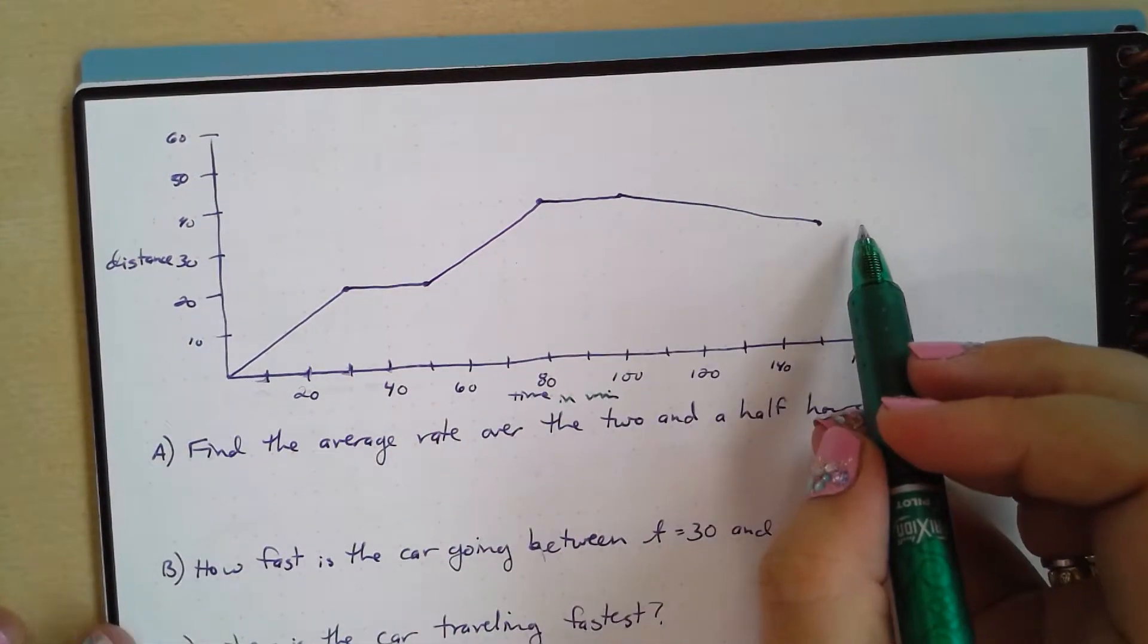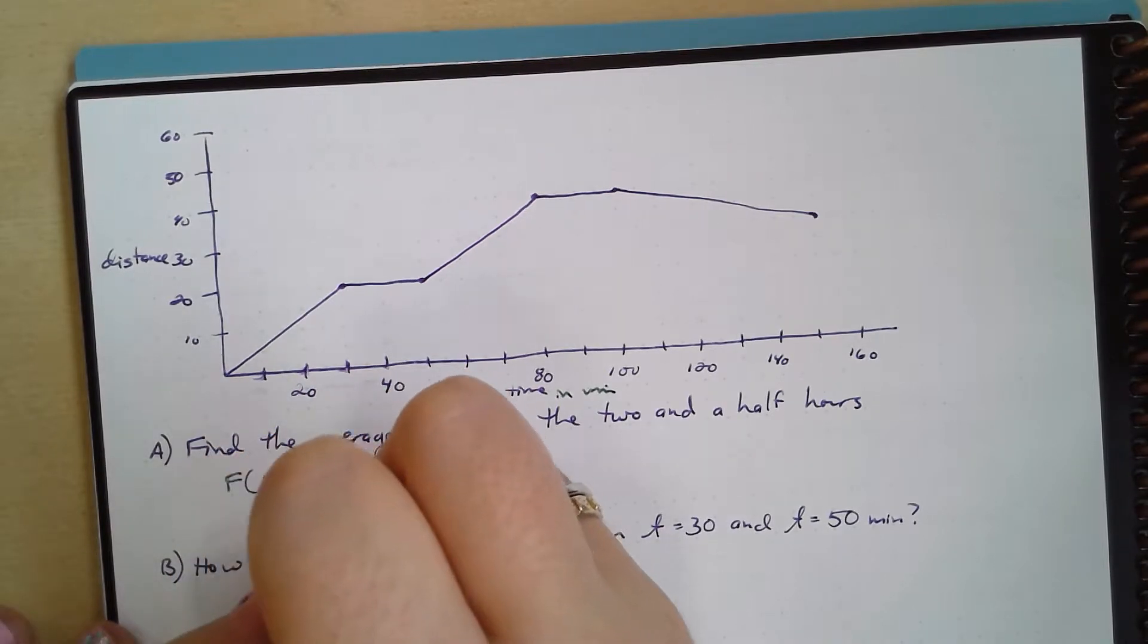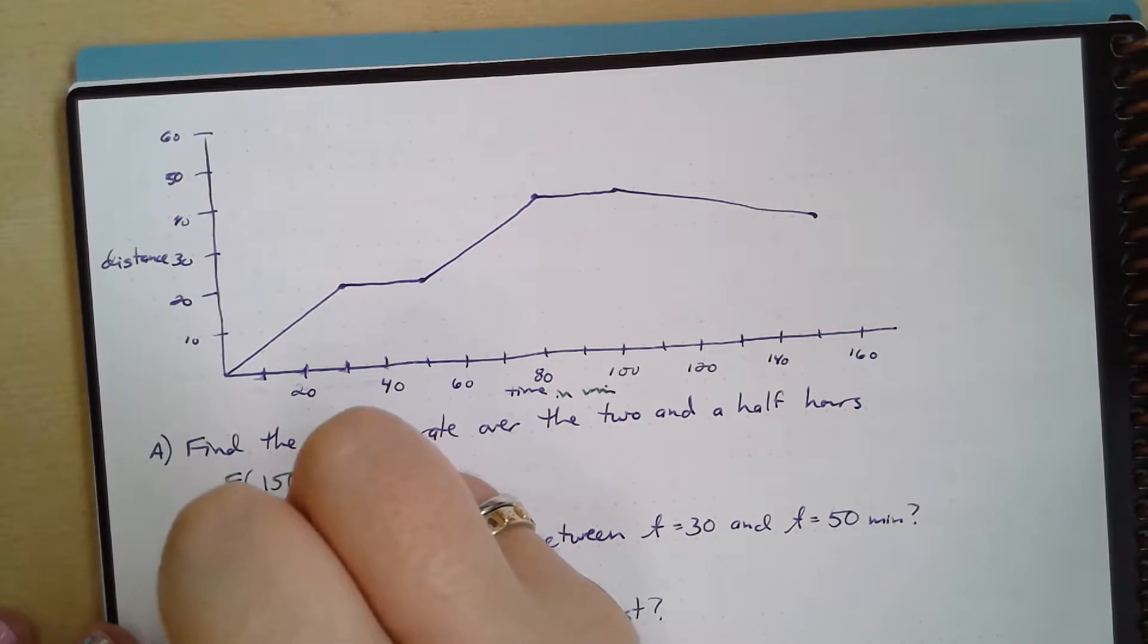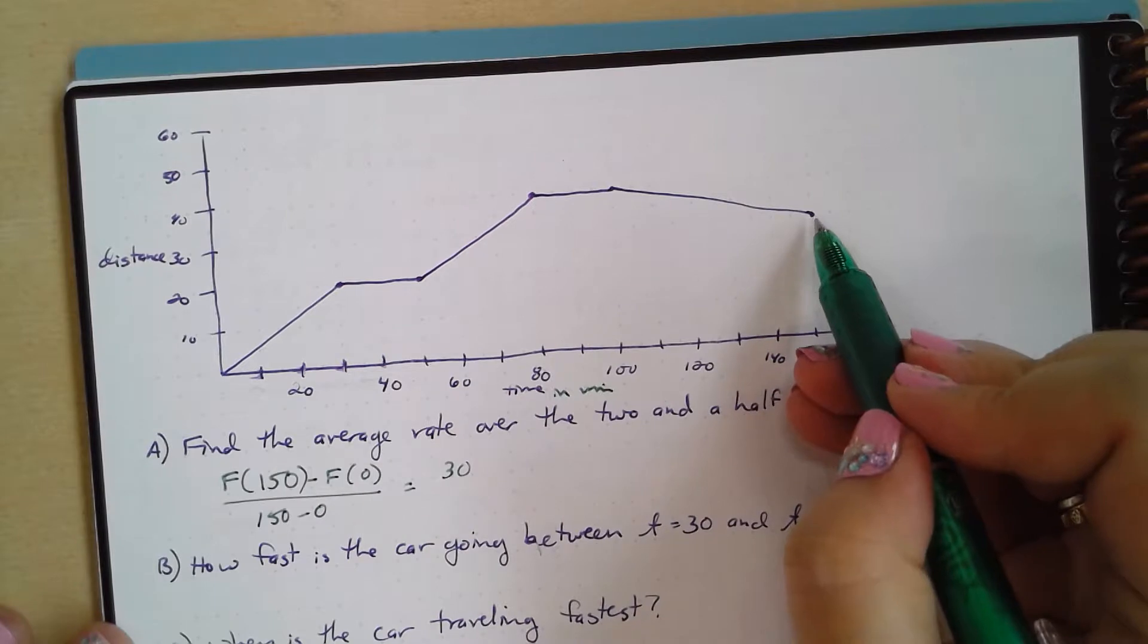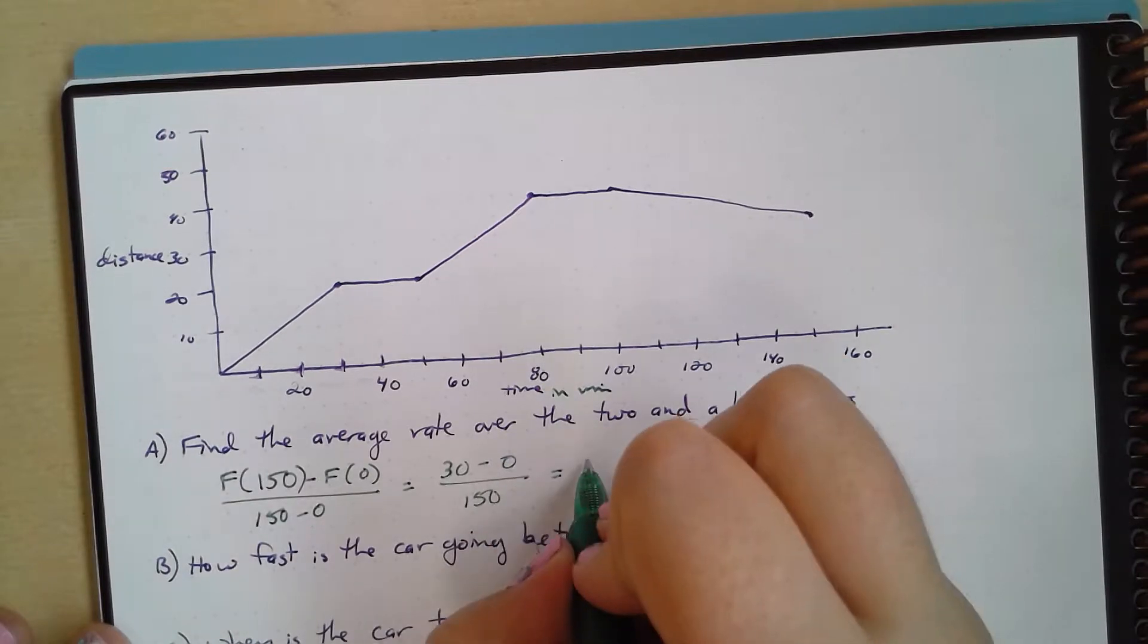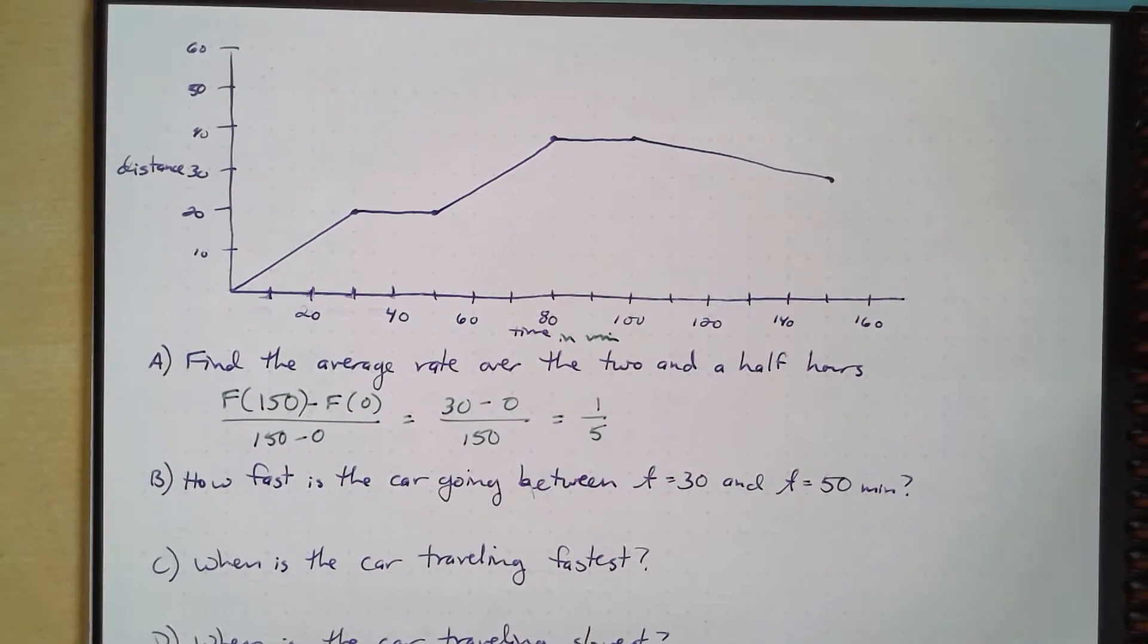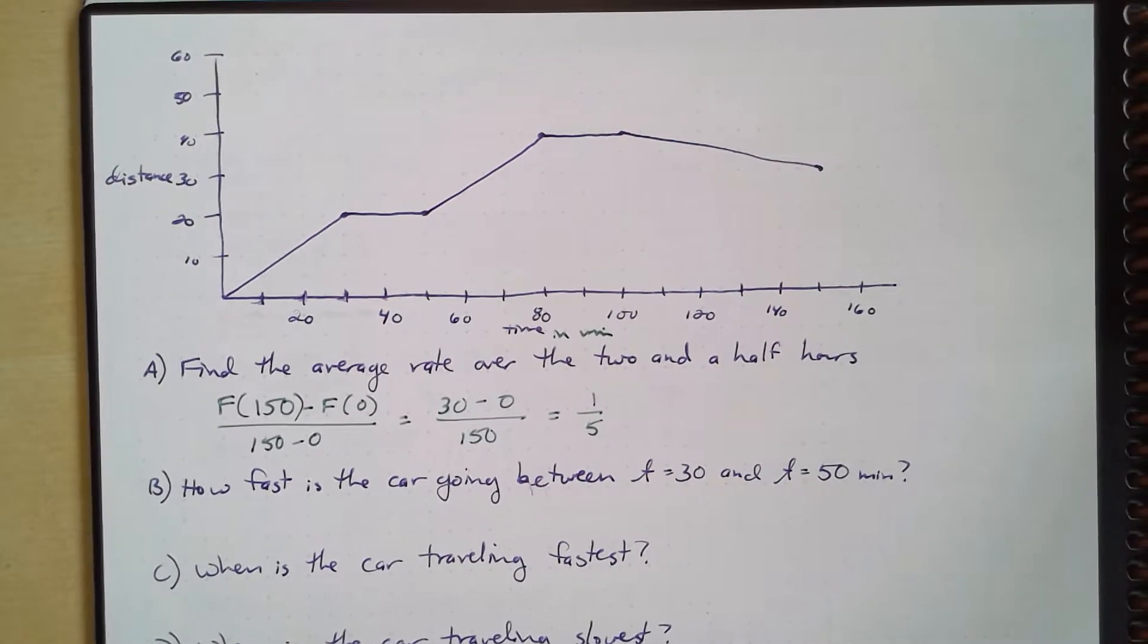Well, to find that average rate of change over this whole time, we're going to take f(150) minus f(0) over 150 minus 0. So that's going to become 30, right? f(150) here is 30 minus f(0) is 0 over 150, which simplifies down to one-fifth. So our average rate of change of that car over that two and a half hours is just one-fifth.